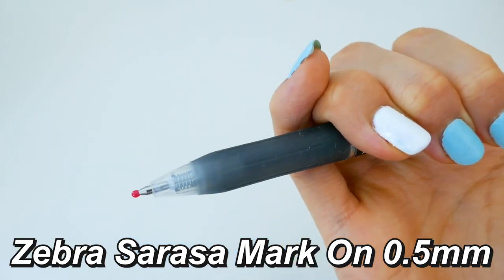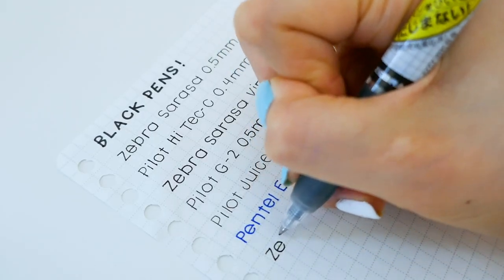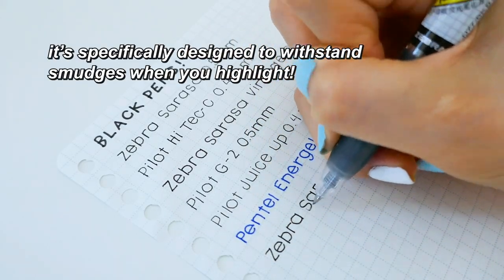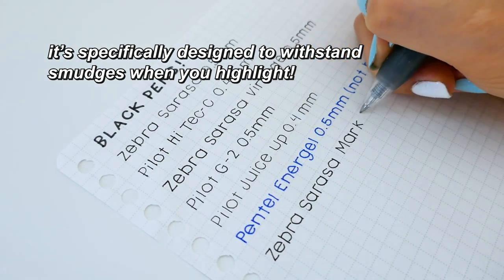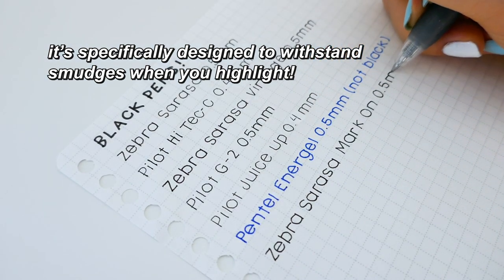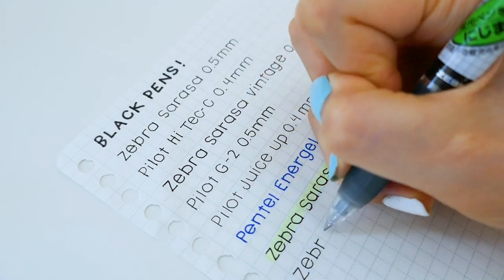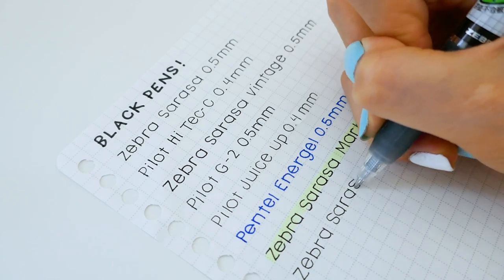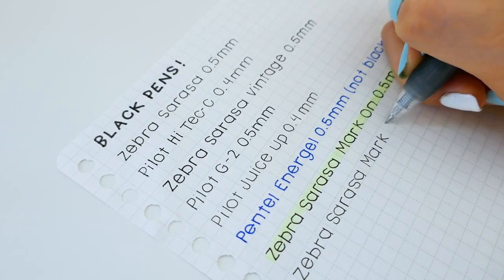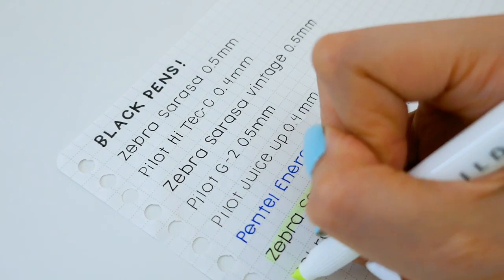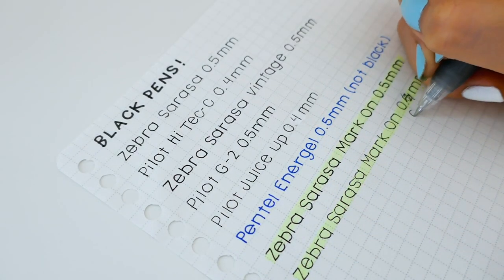Here are the Zebra Serasa mark-ons. These are specifically designed to withstand smudges when you highlight so of course I had to try these out and then I put it to the test. This was minimal smudge after 5 seconds and I thought it was pretty good. You can't see a smudge on the super light neon yellow. However, the 0.4mm was much better. I by accident made a mistake too.